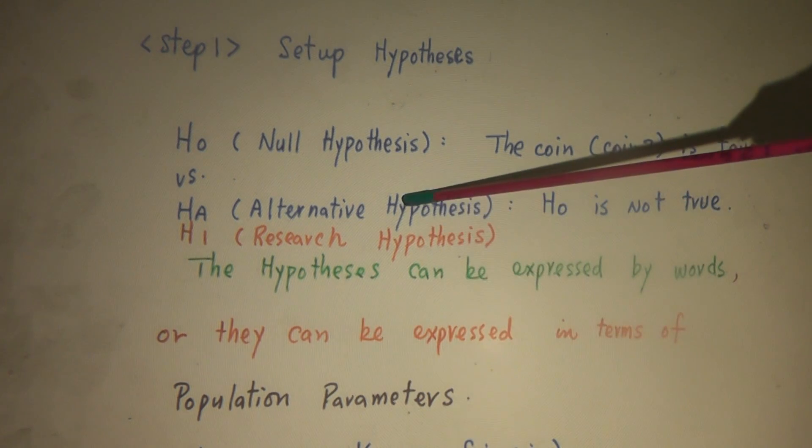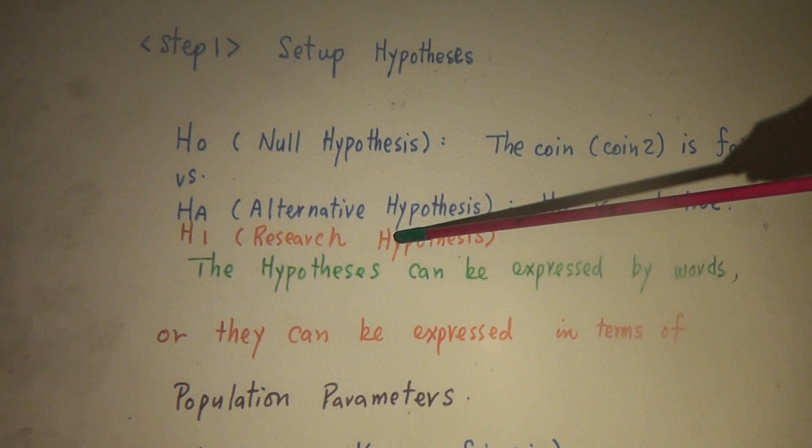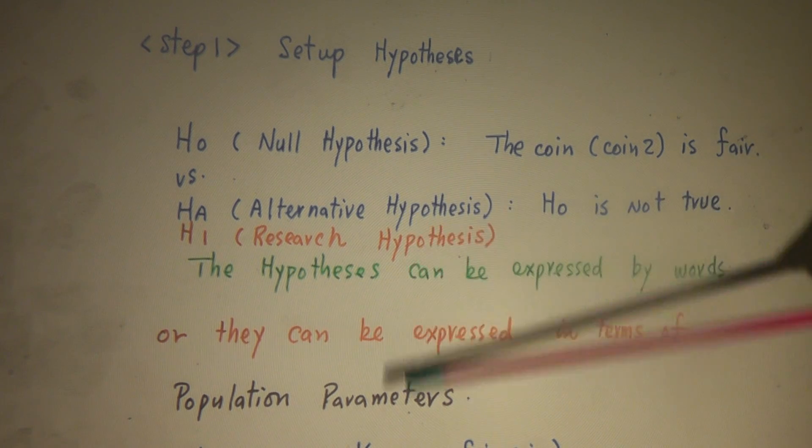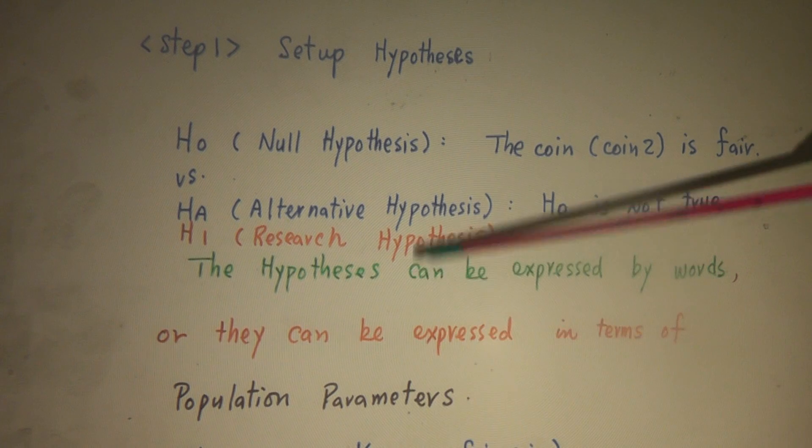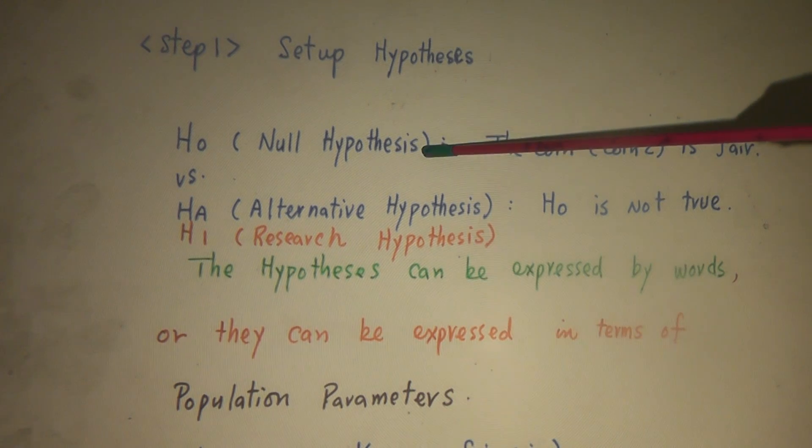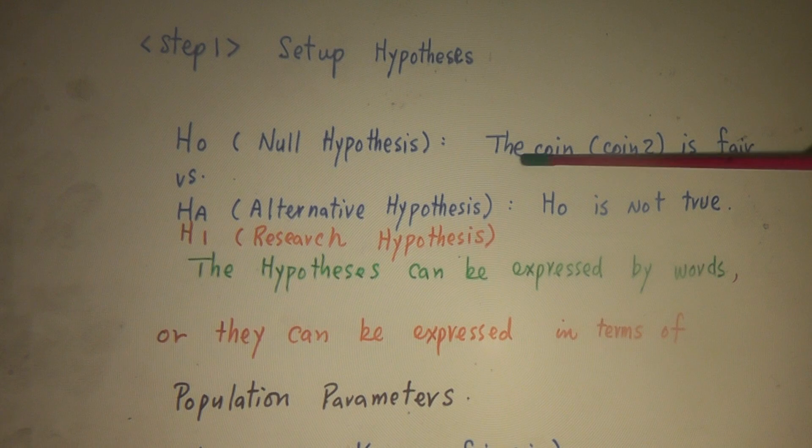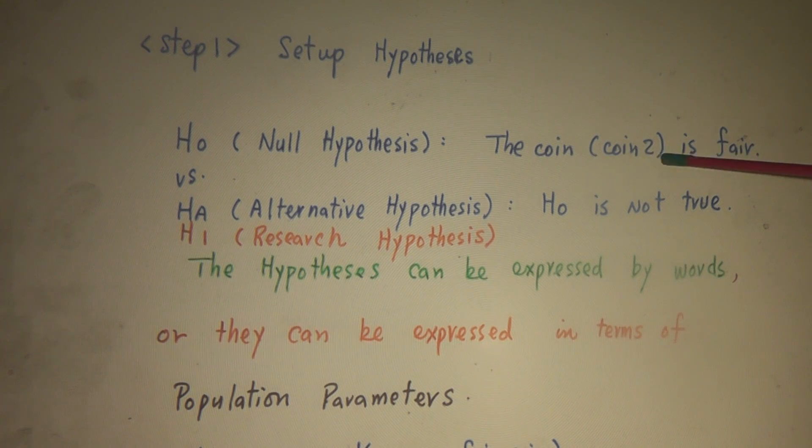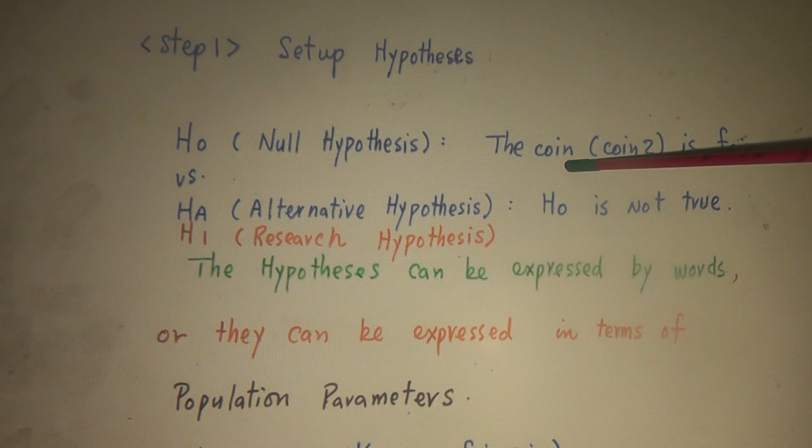So in our lecture, I will use HA and H1 alternatively. Sometimes use HA, sometimes use H1. Null hypothesis: What do we want to test? Well, the coin, the second coin, is a fair coin. And HA, alternative hypothesis, we always say what? H0 is not true. So by this kind of setting, among H0 and HA, you can only have one hypothesis true. You cannot have both of them true. Because one is always against the other one.